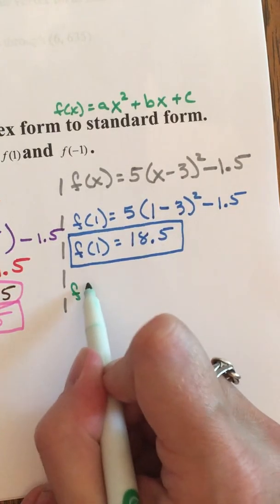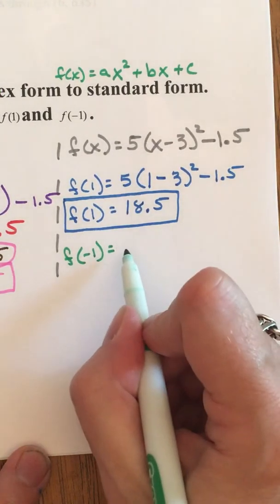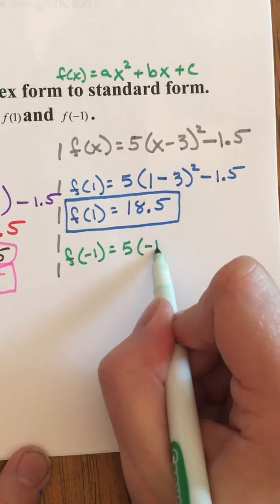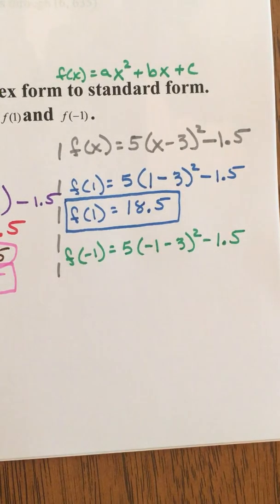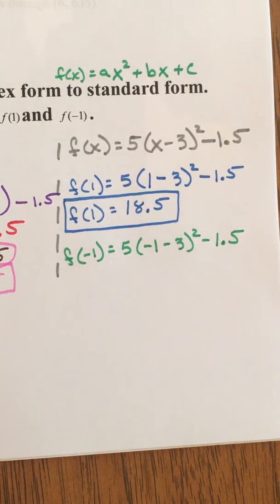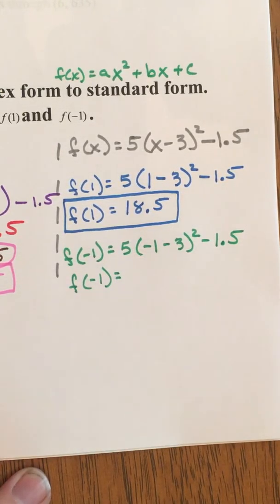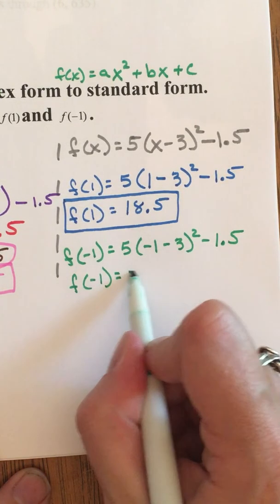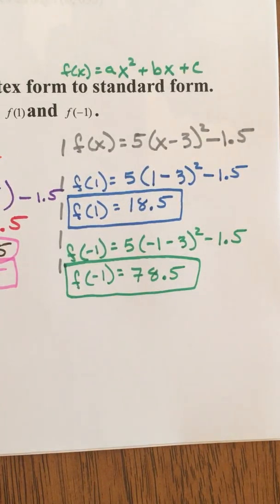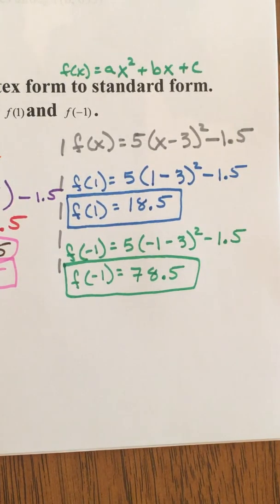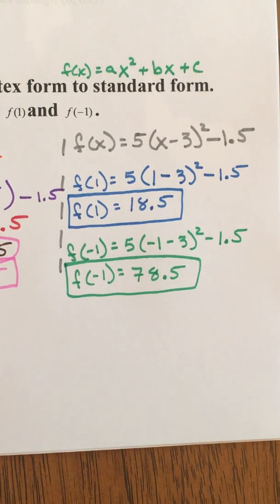Let's do f of negative 1 this is called evaluating a function that's what we're doing we're saying at this specific value what is the function worth. Let's plug a negative 1 in for the x. So pause the video type this into your calculator and let's see what you get. Did you get 78.5? If you did great job. And again you can try that in the standard form or in the vertex form you should get the exact same answer either way. See you in a minute.